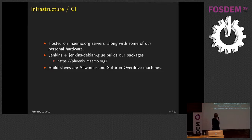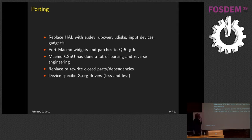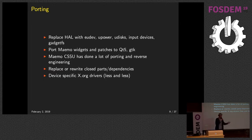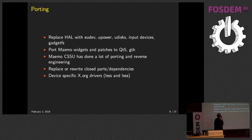Our build slaves are cheap Olimex devices and one of the more powerful 64-bit ARM devices — probably the only ARM CPU that AMD ever made. We've had to do a lot of porting because the OS at Nokia Maemo was really old. It used HAL — Hardware Abstraction Layer — which handled hardware abstraction that's now done by completely separate components in Linux: UDEV, UPower, udisks, the input layer in Linux, and GadgetFS for managing USB gadgets. HAL is just gone, so we had to port a lot of code to these new APIs.